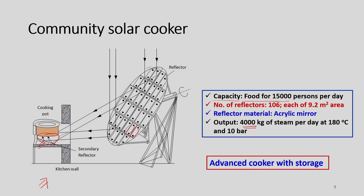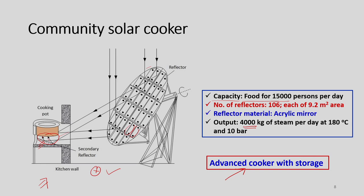One more innovation is cookers with storage. The disadvantage of the community cooker is that energy cannot be stored, so it is valid only when sufficient solar radiation is available and only daytime cooking is possible. If people want to cook at night using this solar cooker, this technology won't work. So we need a storage device: when excess energy is generated during the day, it can be utilized at night for cooking — this falls under advanced cookers with storage.